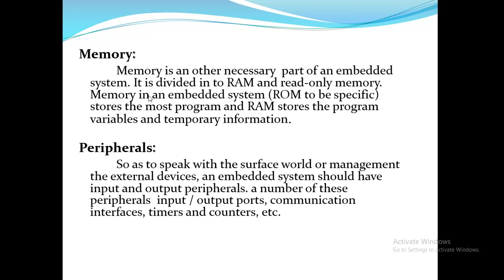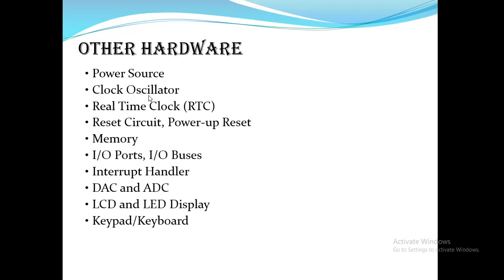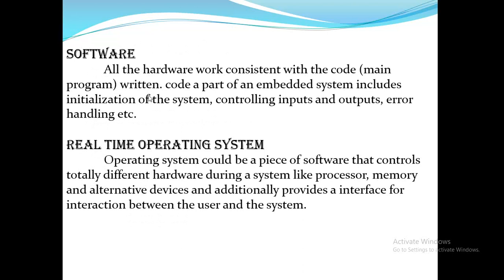Peripherals are the input and output ports used for communication, including timers and counters. Other hardware includes power source, clock oscillator, real-time clock, reset circuit, power-up reset, memory I/O ports, I/O buses, interrupt handlers, DAC, ADC, LCD and LED displays, keypad and keyboard. Software is used to code hardware devices; it includes system initialization, input/output control, error handling, and real-time operating systems (RTOS) used in embedded firmware.